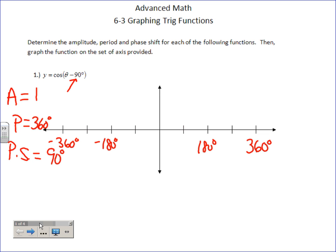Zero degrees in the middle. For my y tick marks, a logical choice is one and negative one — nothing too tricky since the amplitude isn't any higher than before. Basically, do you agree this is pretty much just the regular cosine graph, just shifted 90 degrees to the right? That's really all it is.